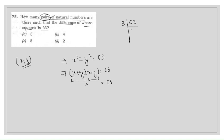Prime factorization of 63 gives us 21, then 7, and then again 7. The possible factor pairs whose product equals 63 can be: 3 and 21, 9 and 7, and 1 and 63.